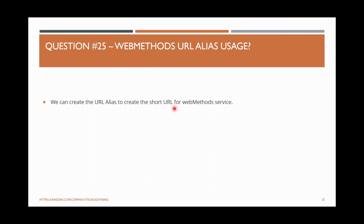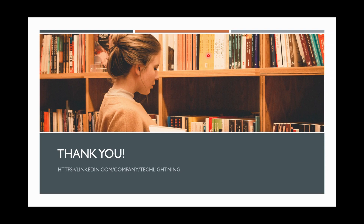What is a webMethods URL alias? For example, if somebody wants to invoke a webMethods service, the full namespace path can be very long — server name, slash invoke, main folder name, subfolder name, and the actual service name. If you want to expose a short URL, you can create a URL alias. For instance, you can create a short alias like hostname/customer and map it to the complete full namespace. URL aliases help create short URLs in webMethods.